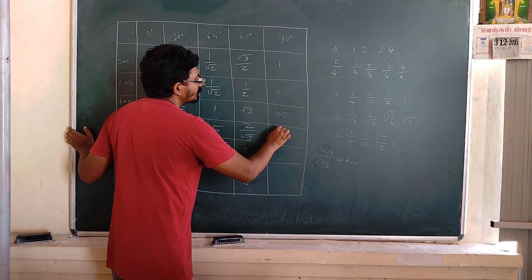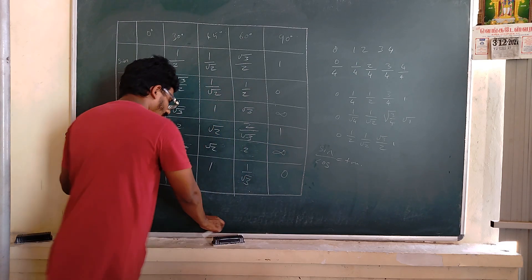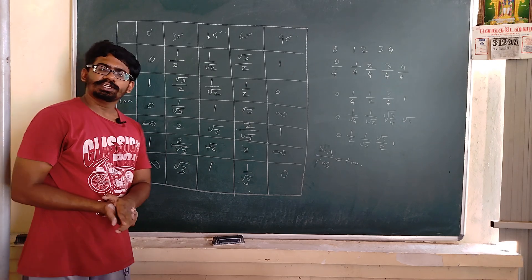Here it is 1 by square root of 3, then 1, then infinity, and 0. So with here, the trigonometric table ends.